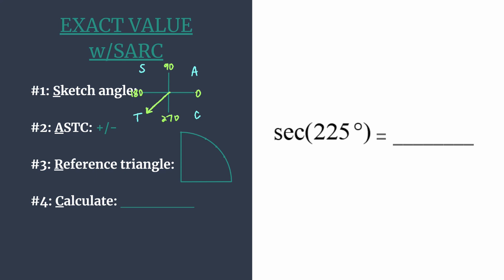We're looking at our angle. It's in quadrant 3. Only tangent and cotangent are going to be positive. Thus the secant of 225 must be negative. So let's go ahead and mark that.